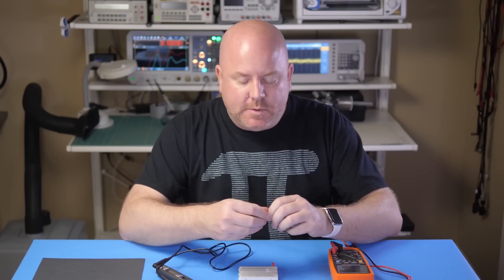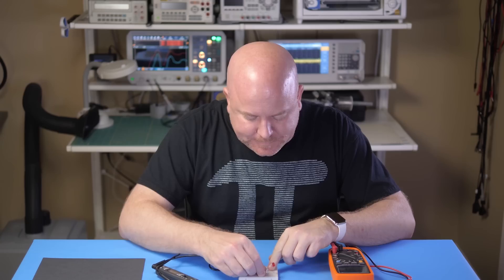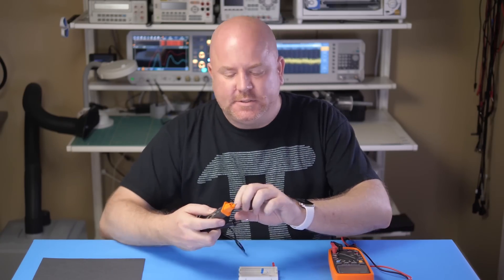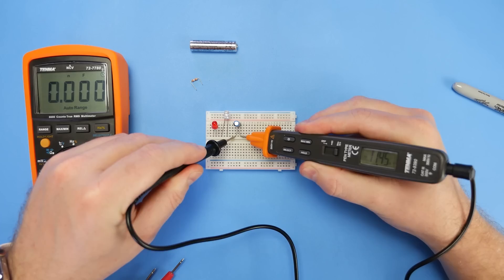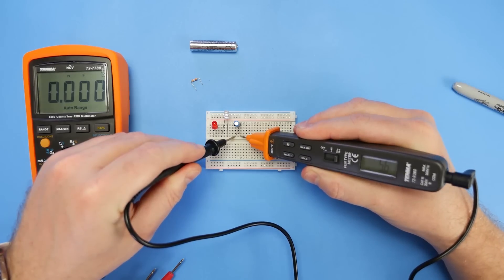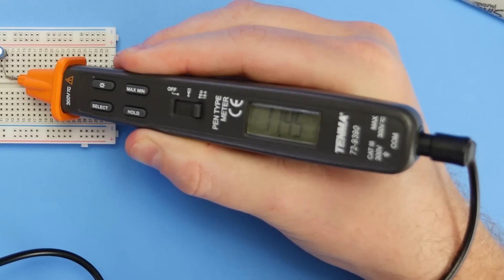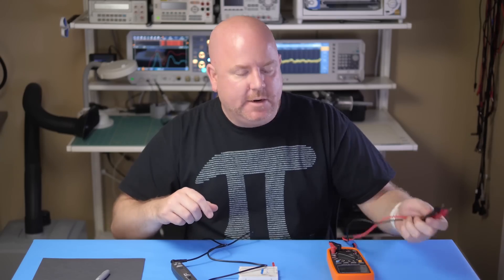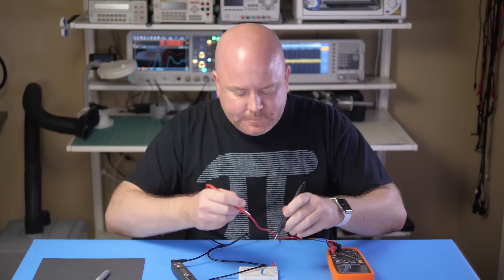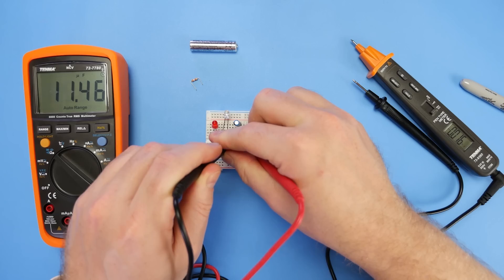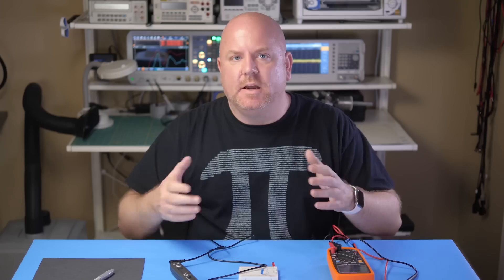This electrolytic capacitor's label says it has 10 microfarads. Let's see what the pen style says first. Okay, it's measuring 11.45. Now we can compare it to the big multimeter. It says 11.48. Both of these numbers are close enough for me to call it the same. Measuring capacitance is tricky, so I only use a DMM to get the capacitor's rough value. Both of these numbers tell me that the capacitor is around 10 microfarads.